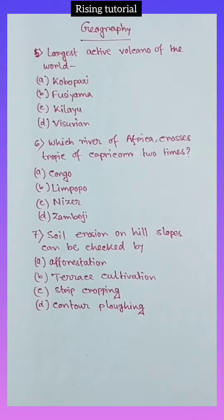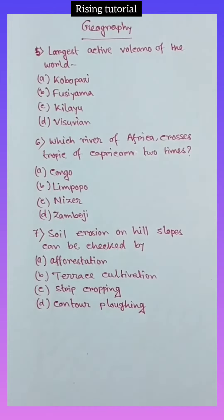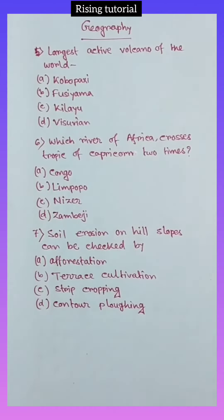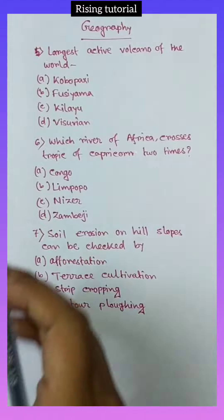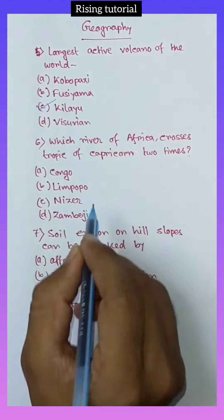Number 5. Largest active volcano of the world: option A, Cotopaxi; option B, Fujiyama; option C, Kilauea; option D, Vesuvius. Answer key: option C, Kilauea.